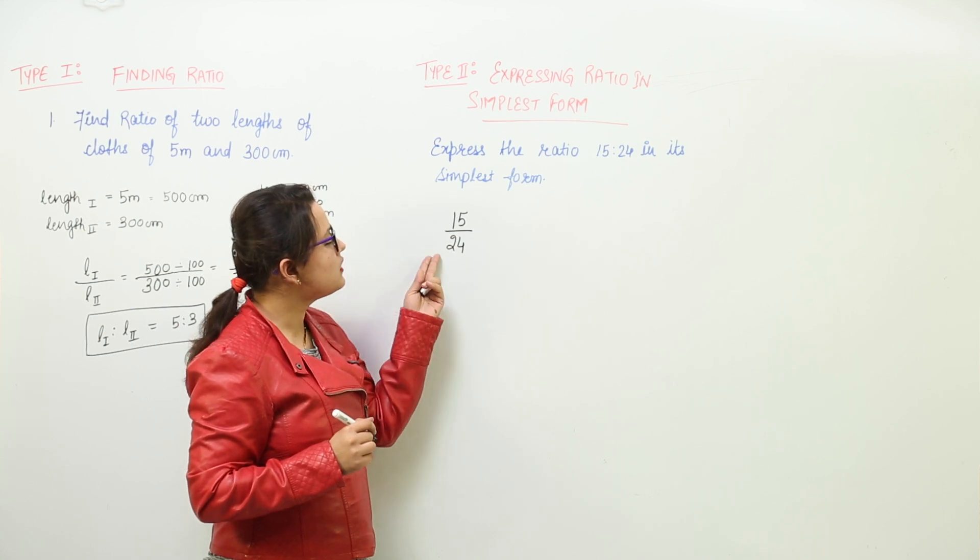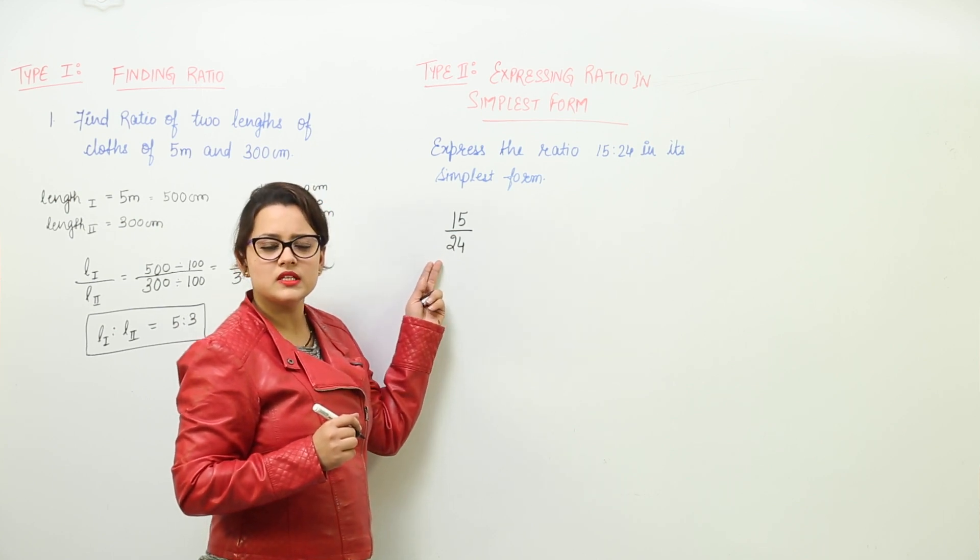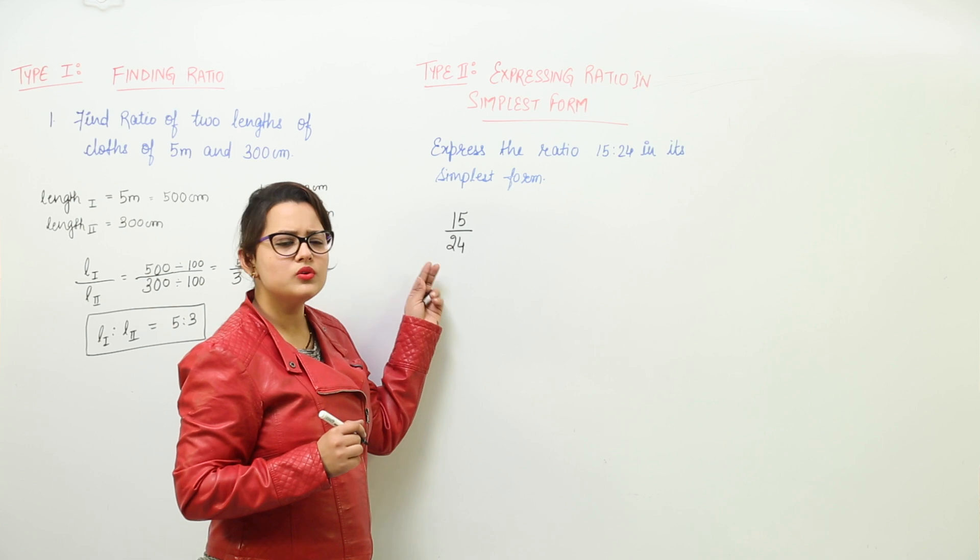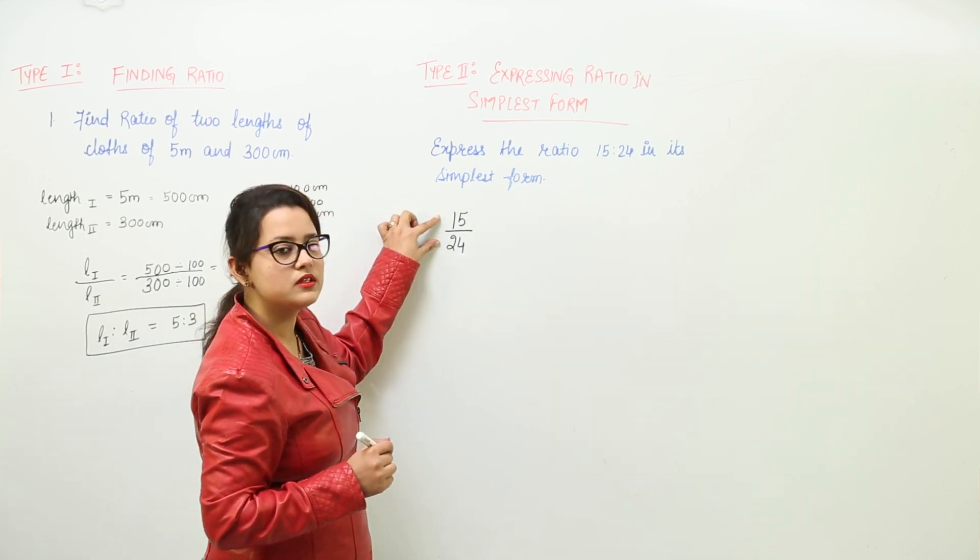Now can we check the numerator and denominator? Are they having the HCF equal to 1? Or you can check, do they have any other factor common other than 1?